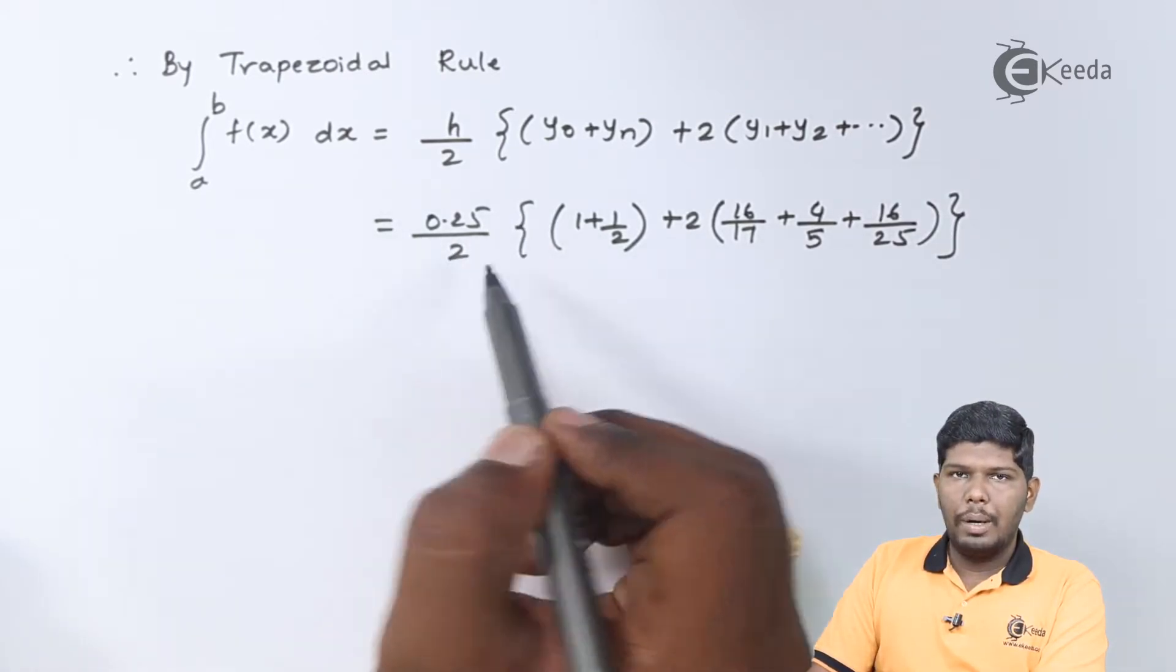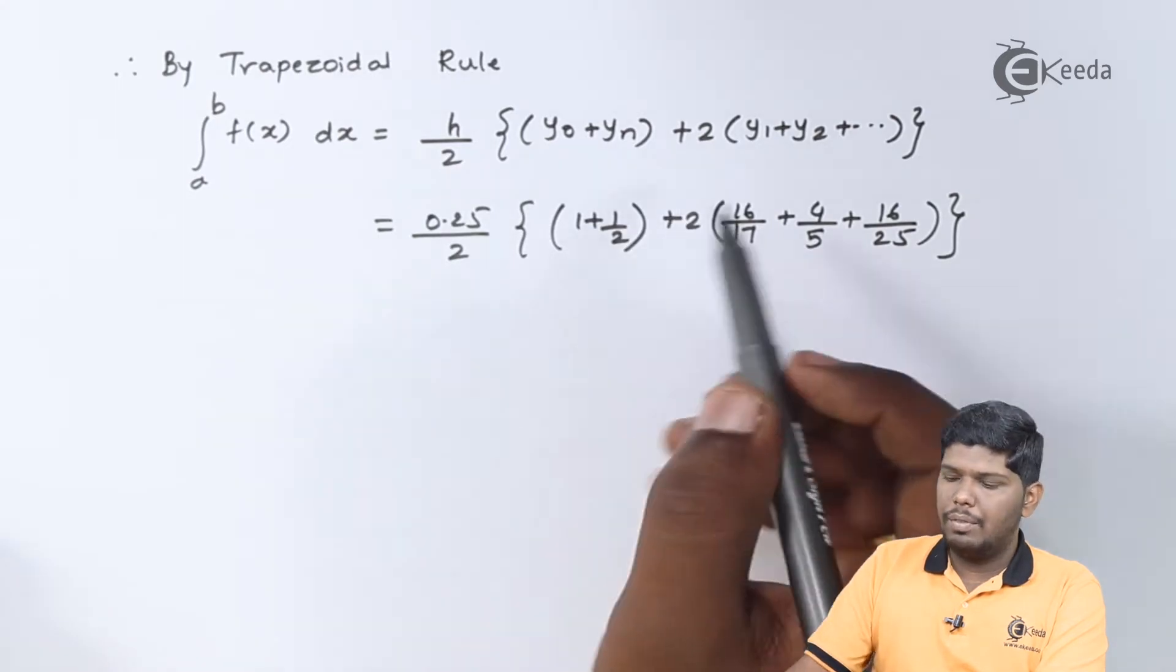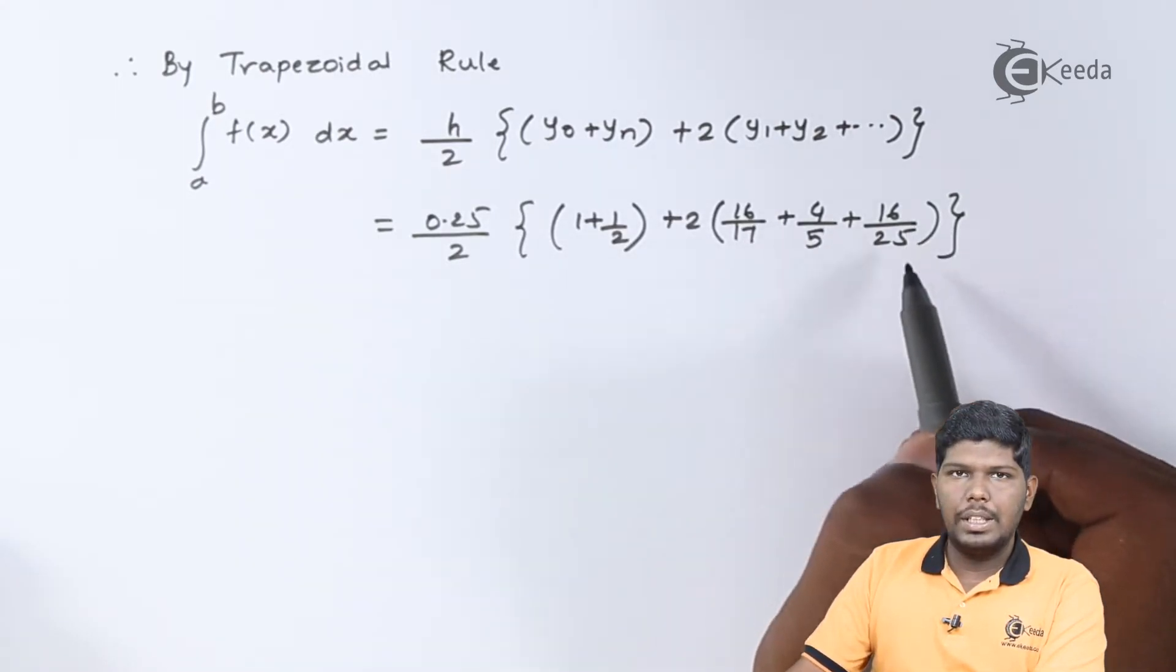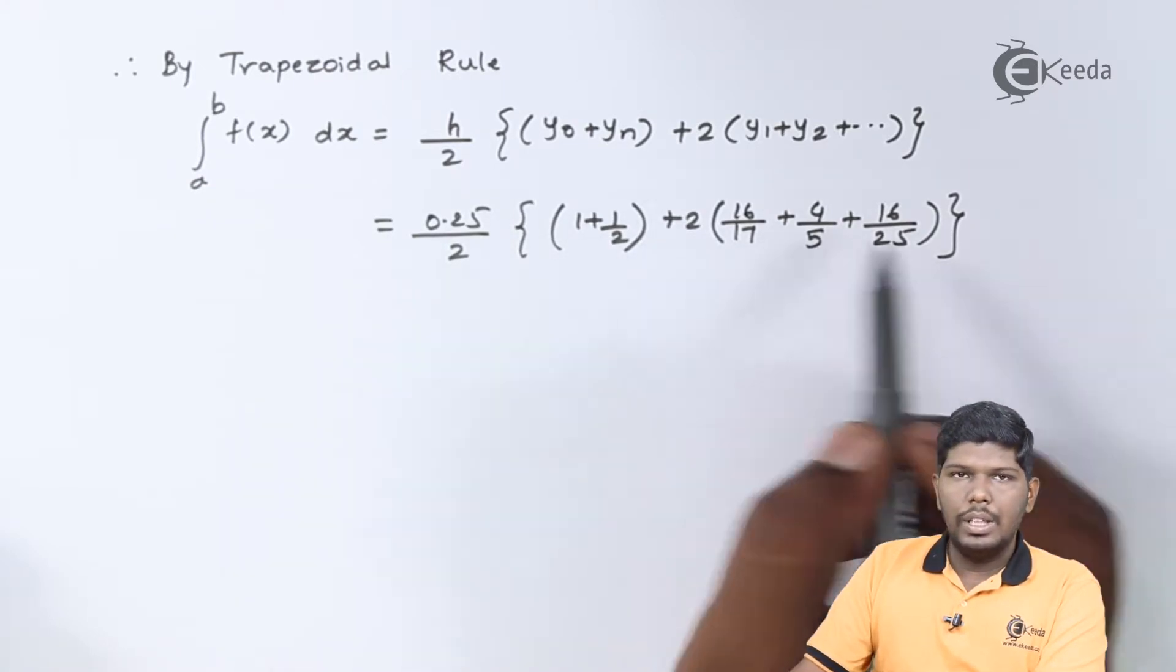Therefore, this will be 0.25 upon 2 times 1 plus half plus 2 into 16 by 17 plus 4 by 5 plus 16 by 25. Now, let us solve these fractions.